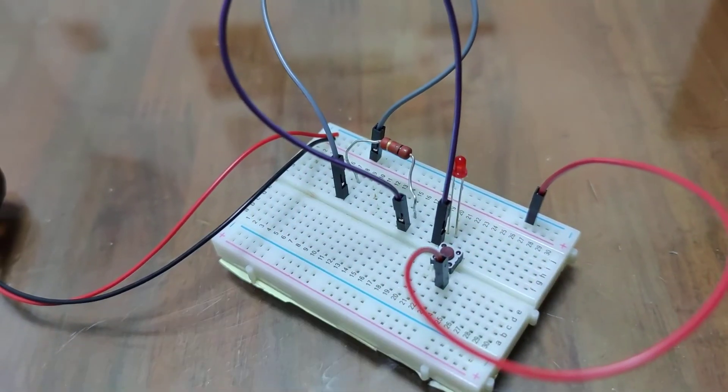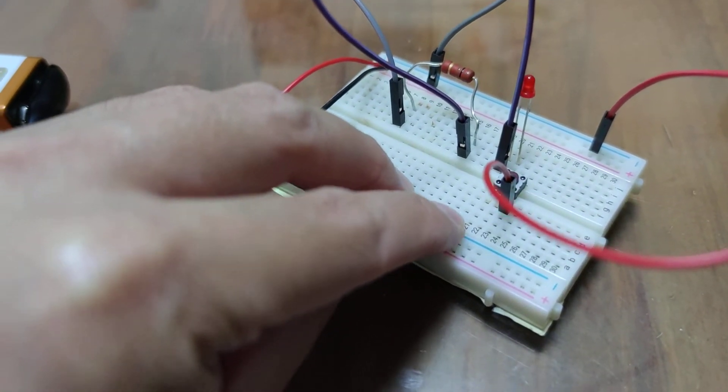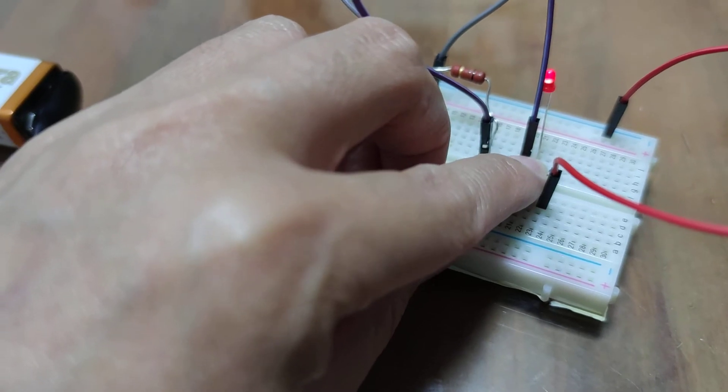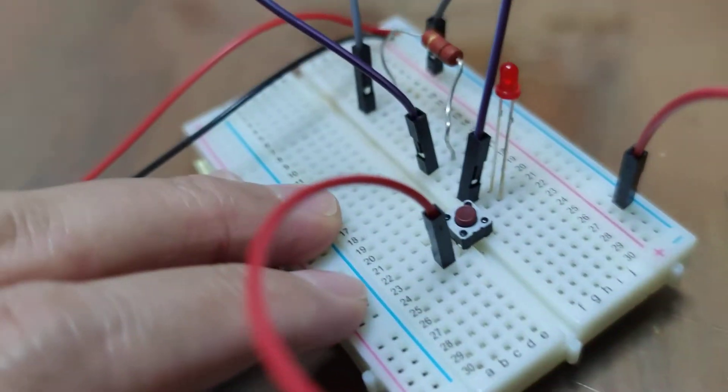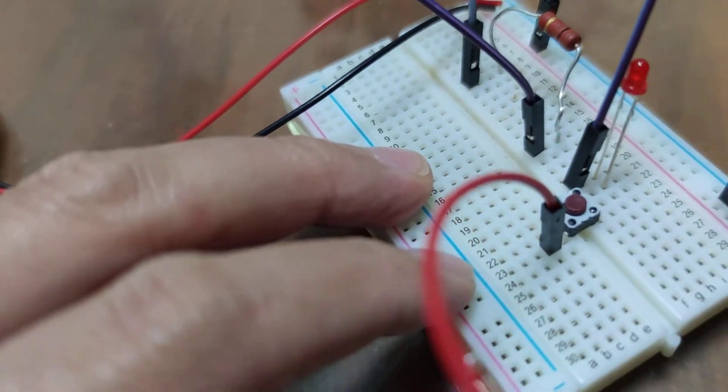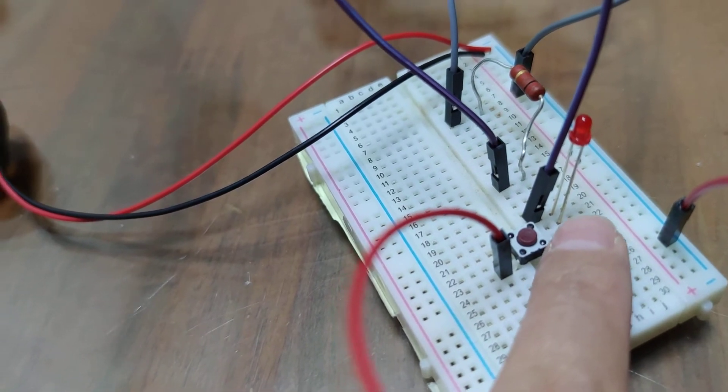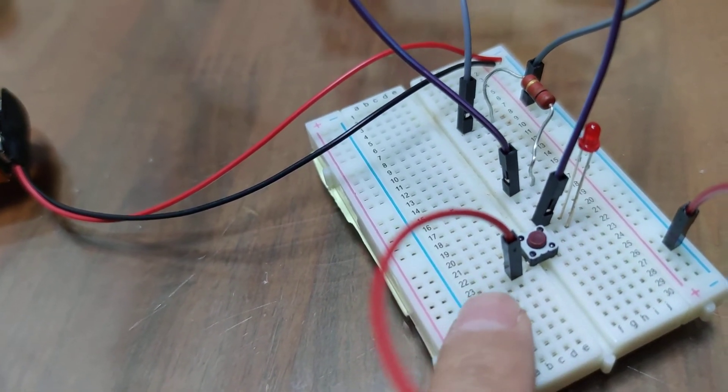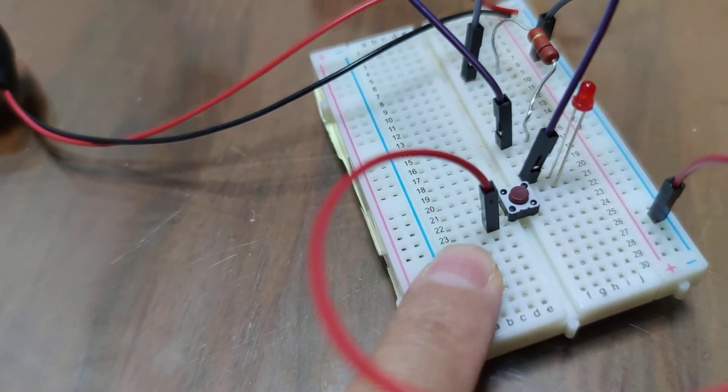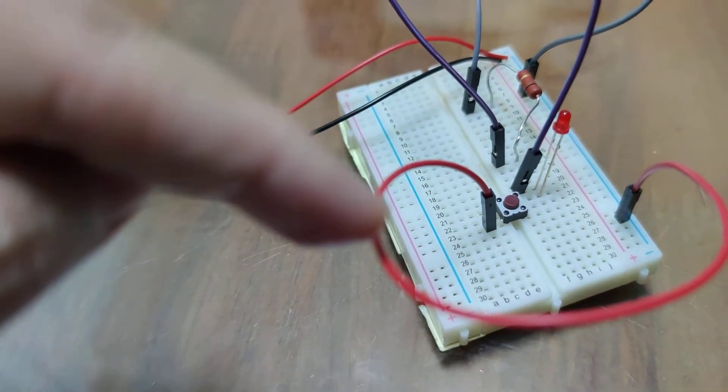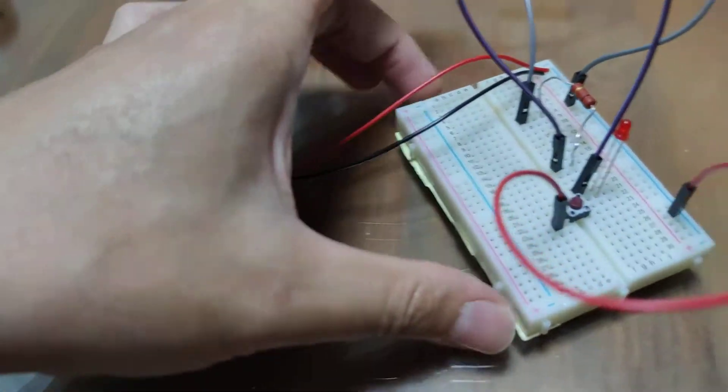So what that is actually doing is the switch right now is stopping the electricity from moving. When we press the button, it's actually connecting diagonally from number 21 on this side of the board across the switch to number 23 on the other side of the board. And then that's going back through that red wire and finally back to the battery where it completes the circuit.